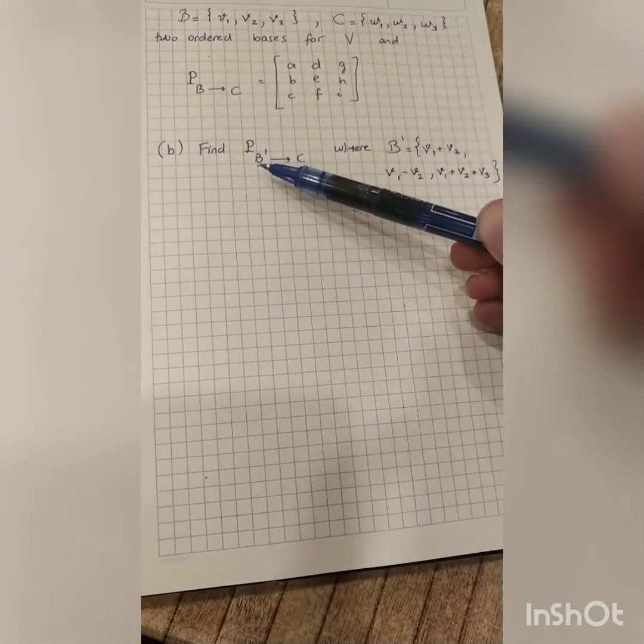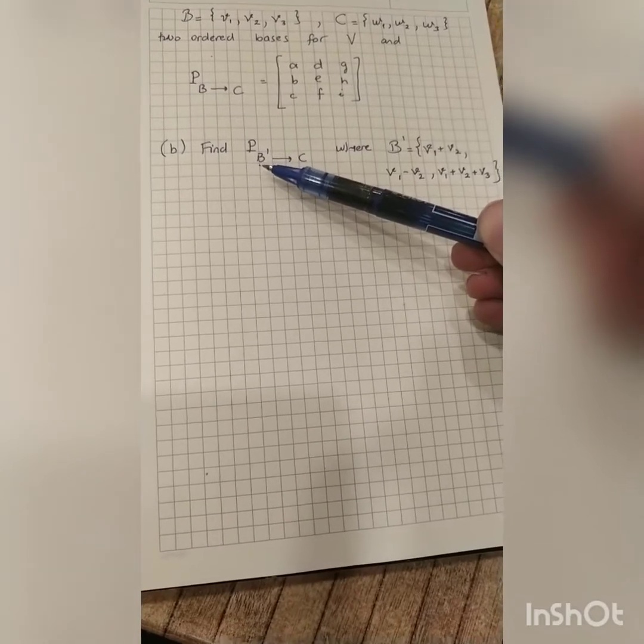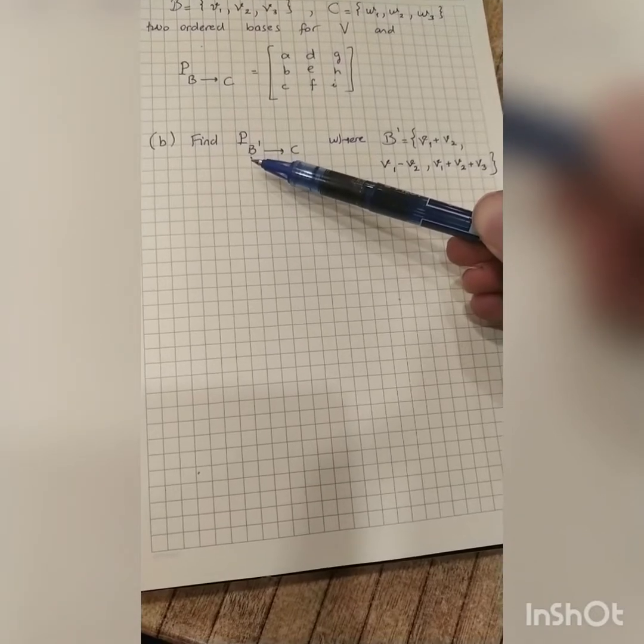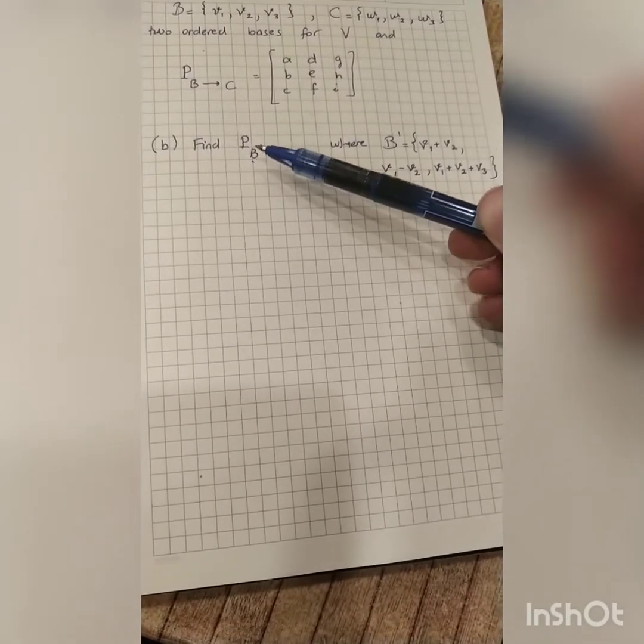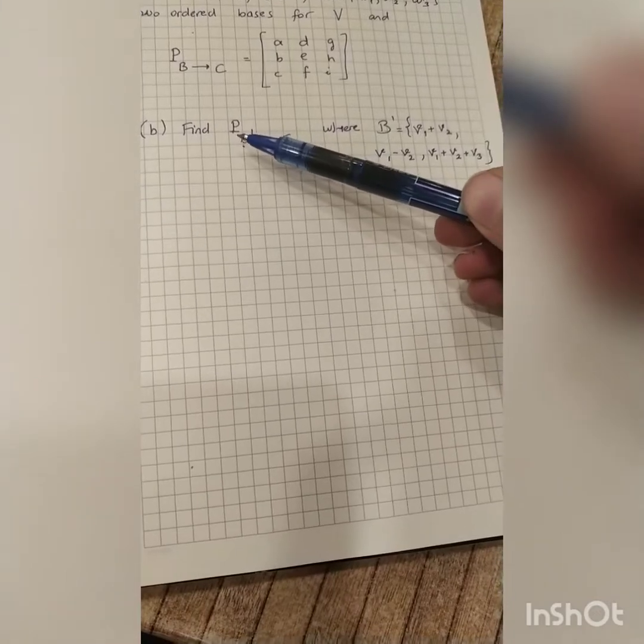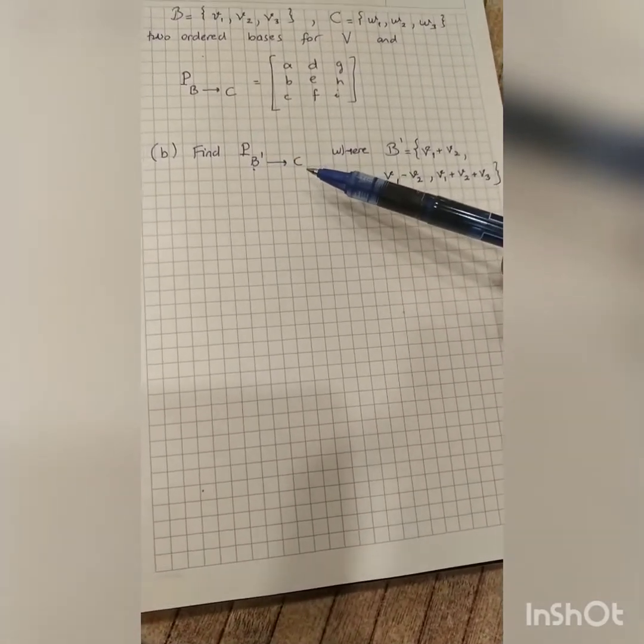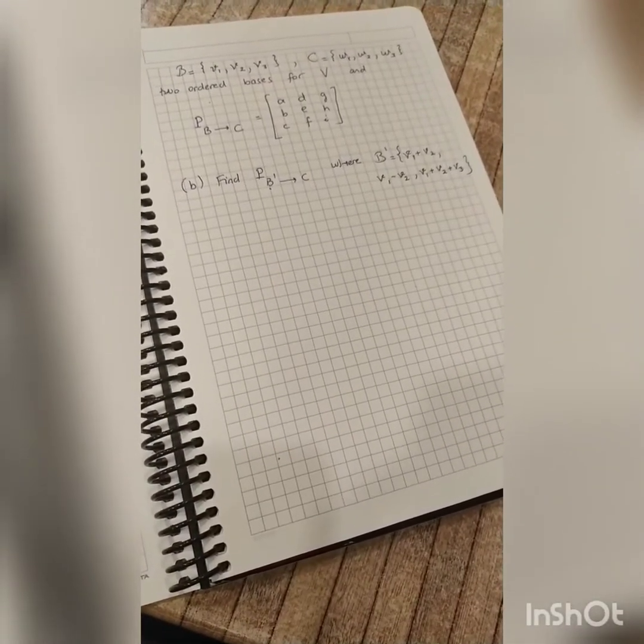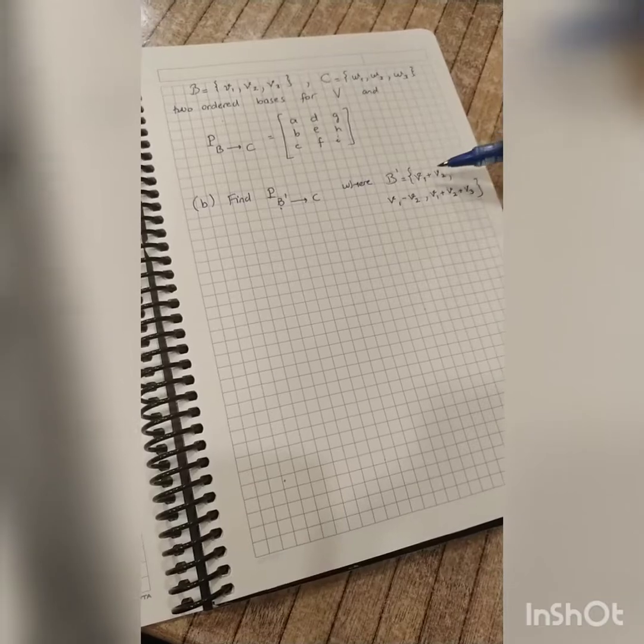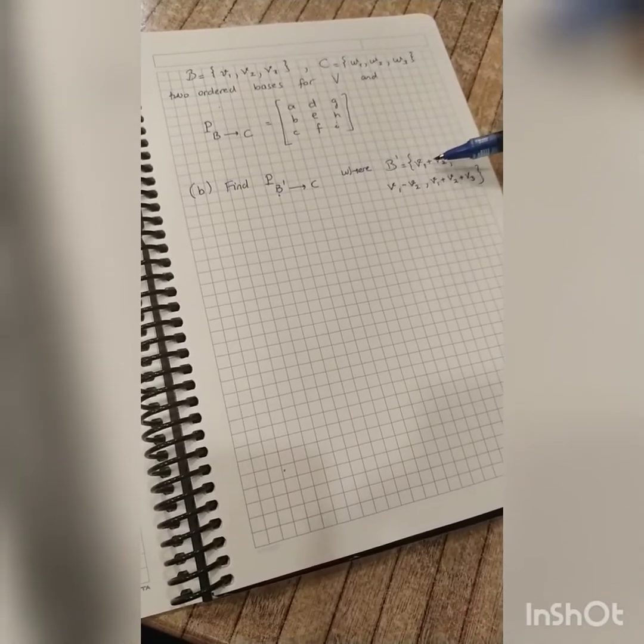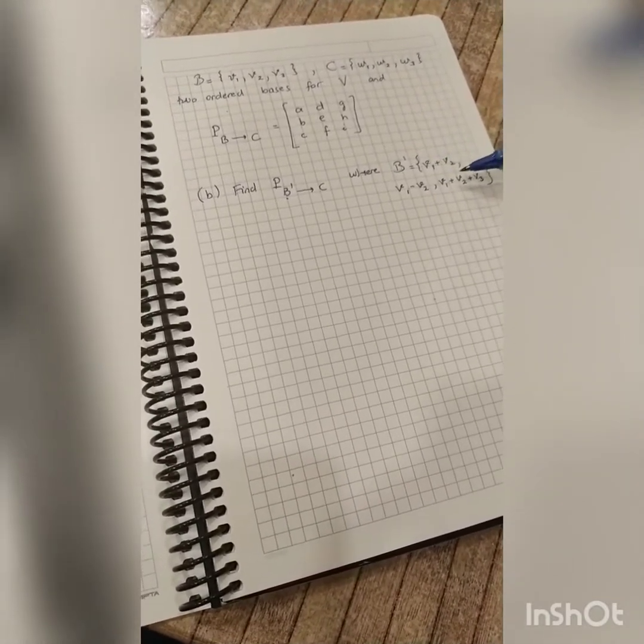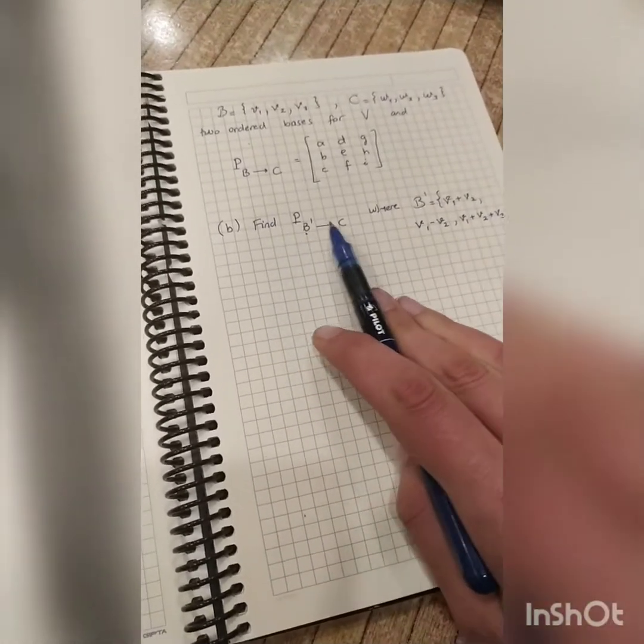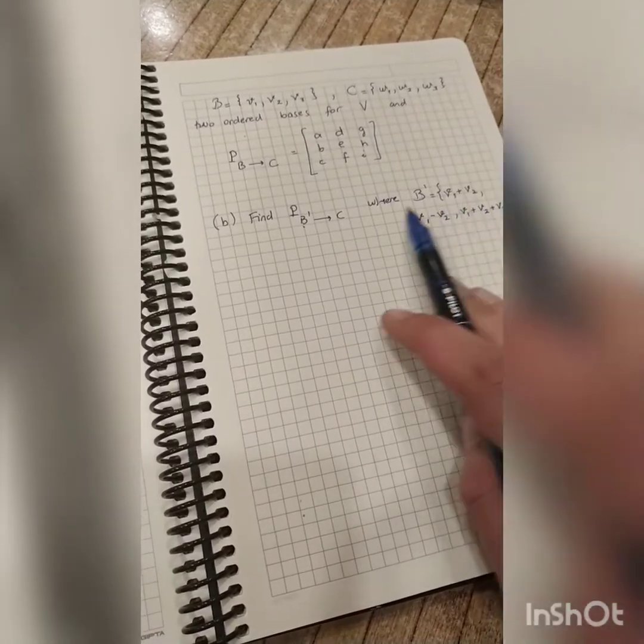What does this mean? It means that when I am given a coordinate matrix from B', when I'm given coordinates of a vector in B', I want to multiply those coordinates from the left by this matrix so that I get the coordinates in C. So actually this matrix P should give me when I'm given the coordinates 1, 0, 0 from B', i.e., when I'm given the vector V1 plus V2, this matrix P should give me the coordinates of that vector in the basis C.